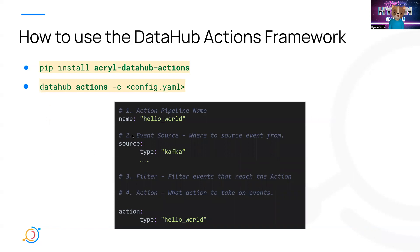So how does it work and how can we execute it? Basically, it'll be executed like a normal ingestion using the CLI, except you have to install the actual DataHub Actions module and use 'datahub actions' instead of 'datahub ingest', and configure the action config file, which looks something like this. You have to define the name of the action pipeline, define the source — which is Kafka — and you could also set some filters.